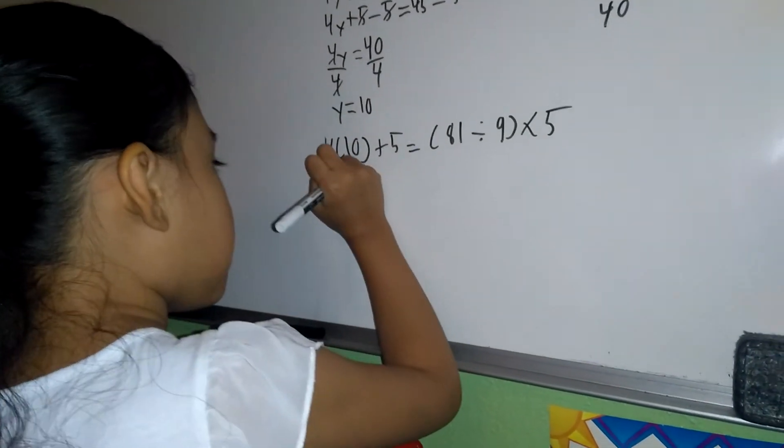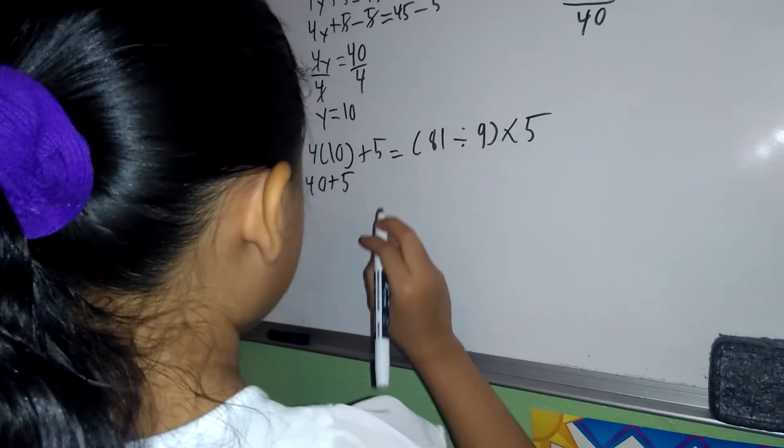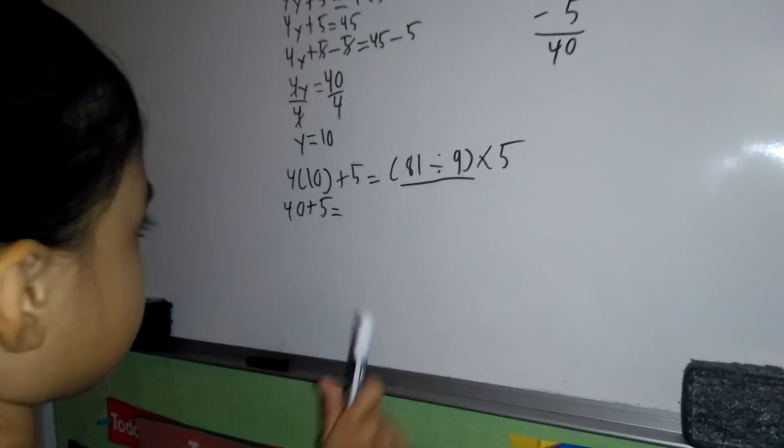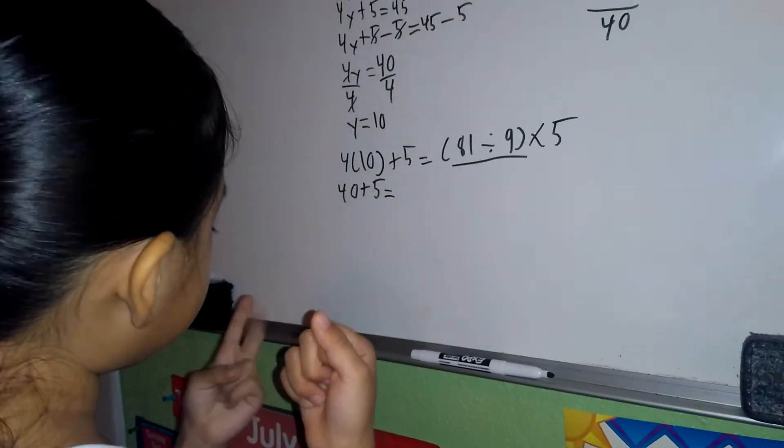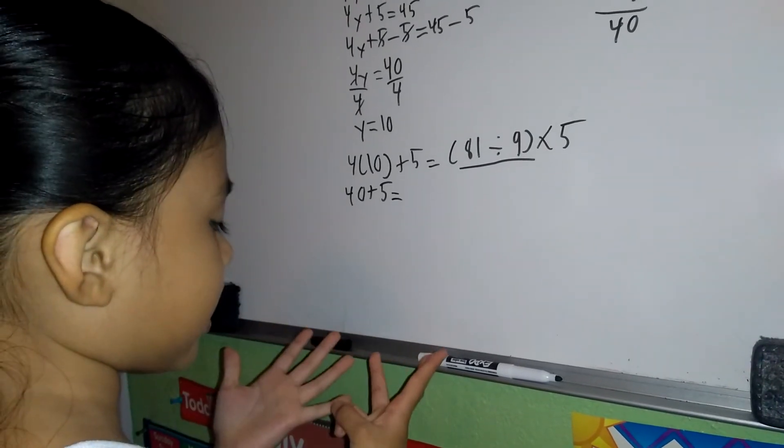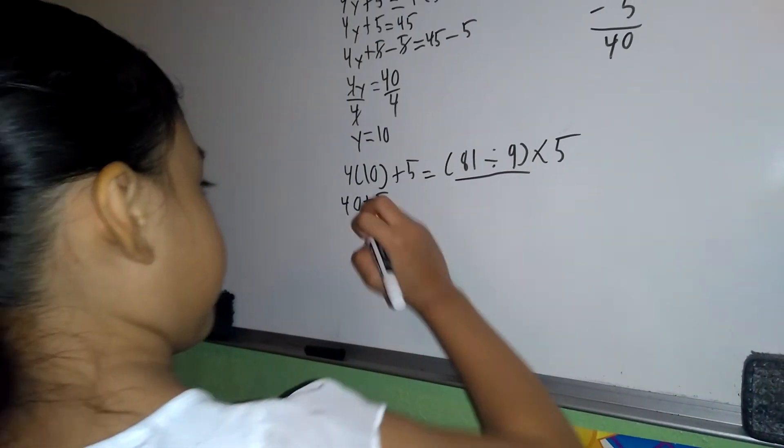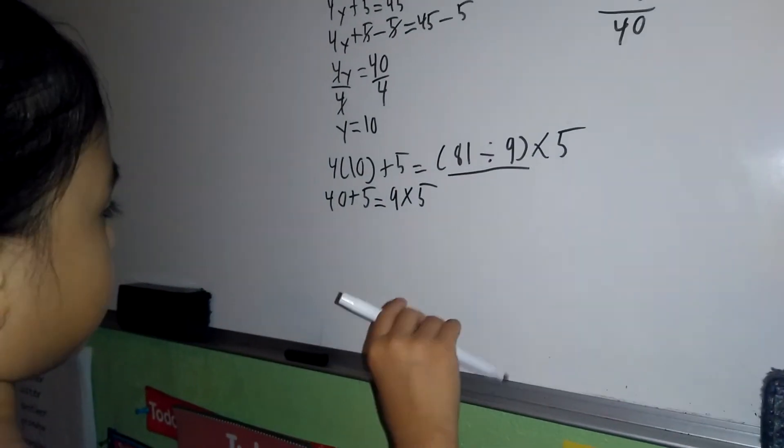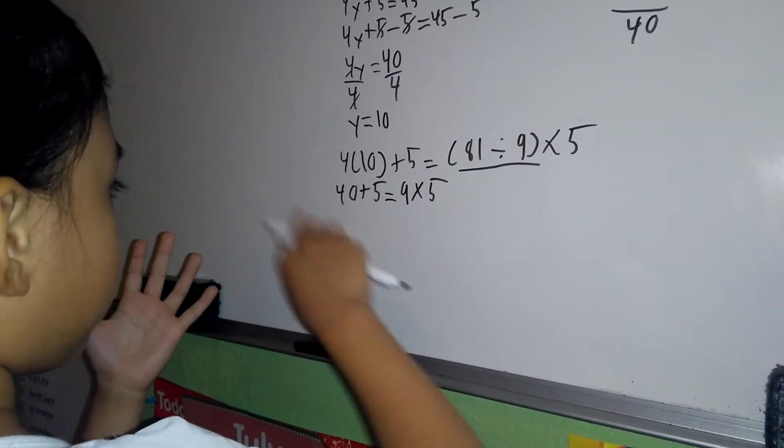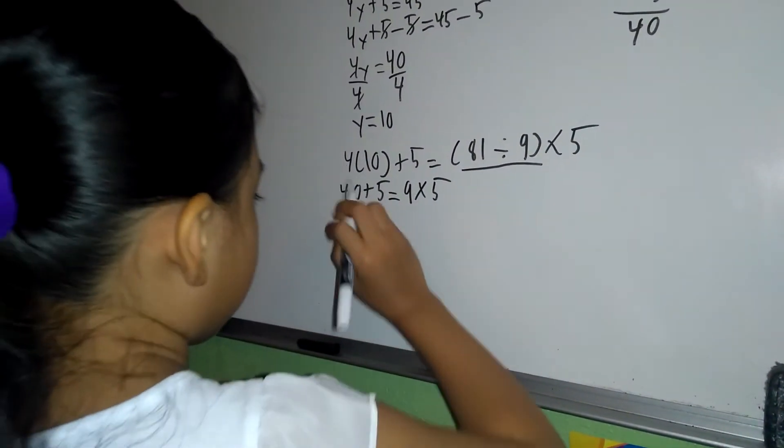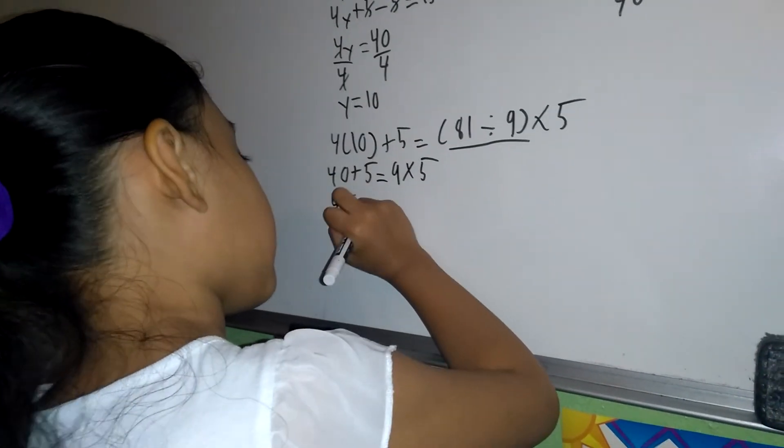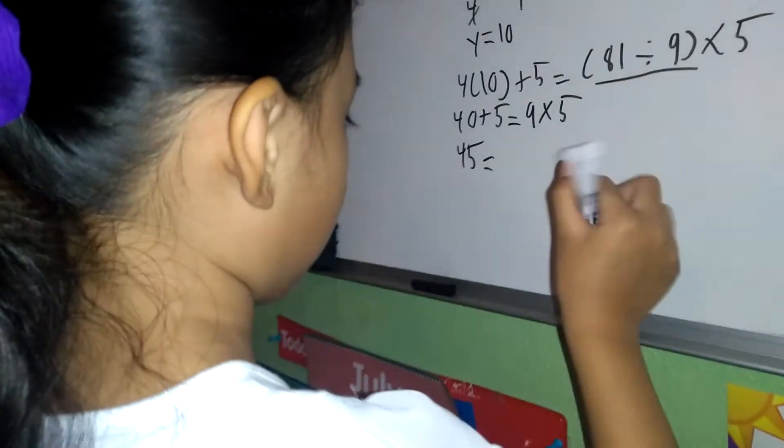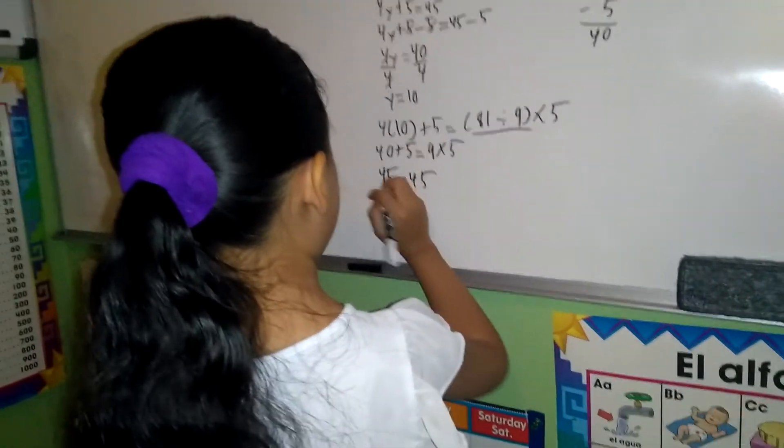40 plus 5 equals 45. 81 divided by 9 equals 9. 9 times 5 equals 45. So 45 equals 45. Check.